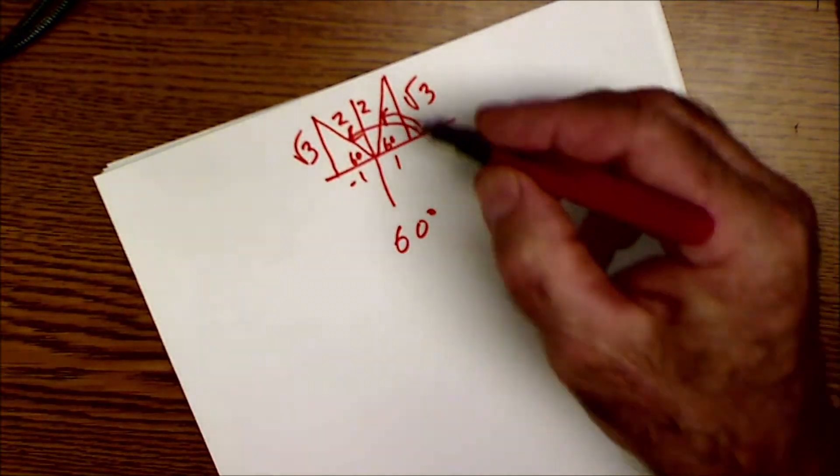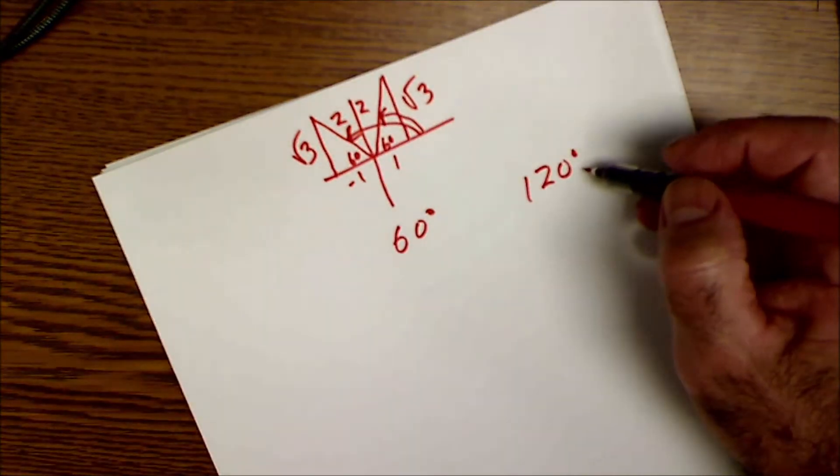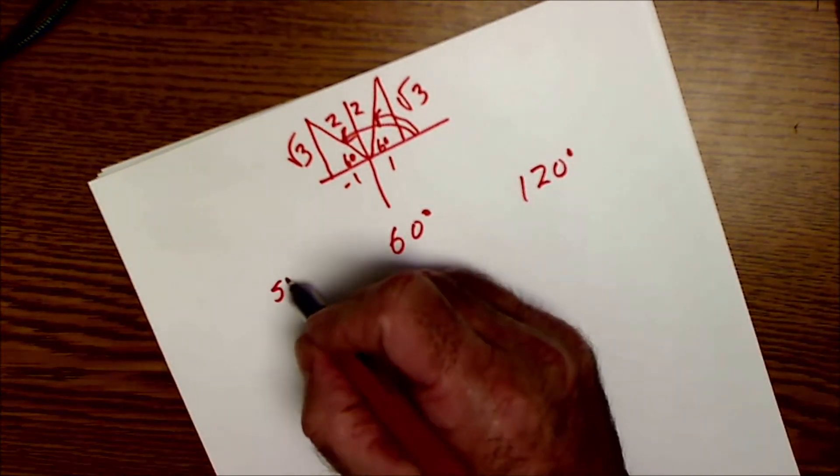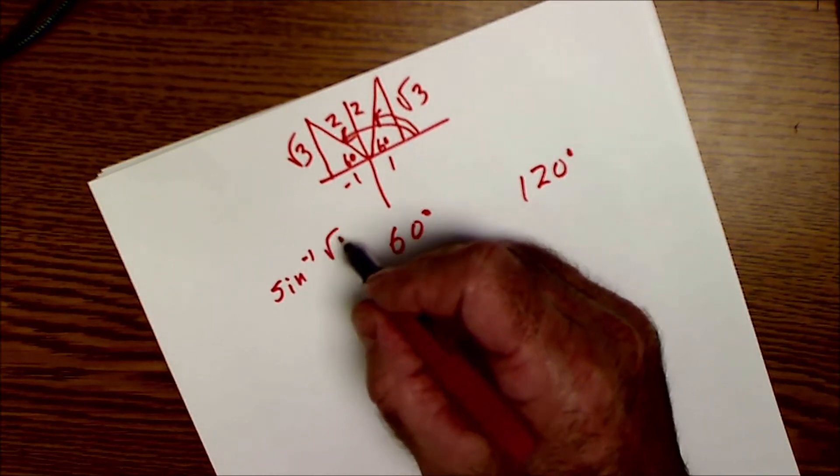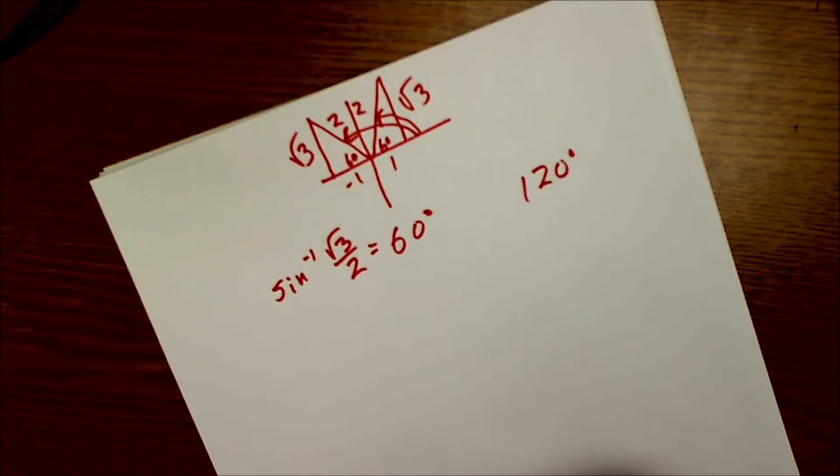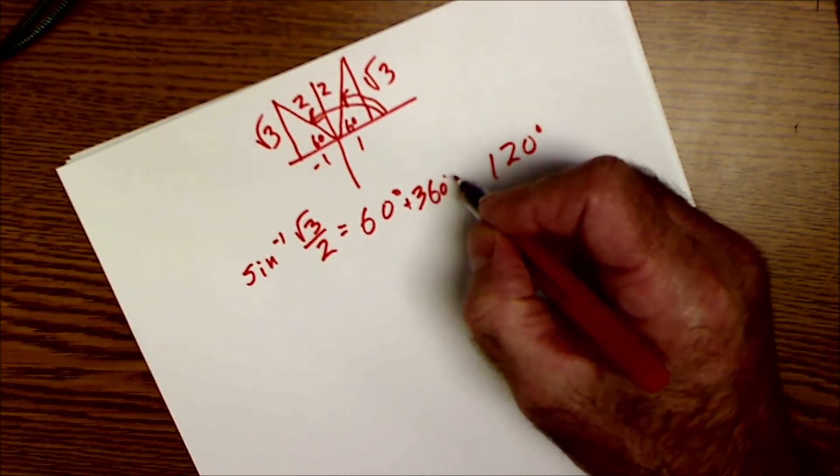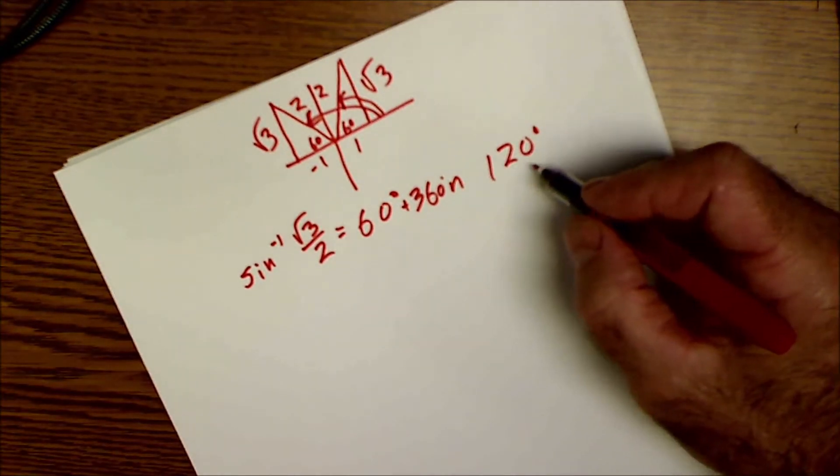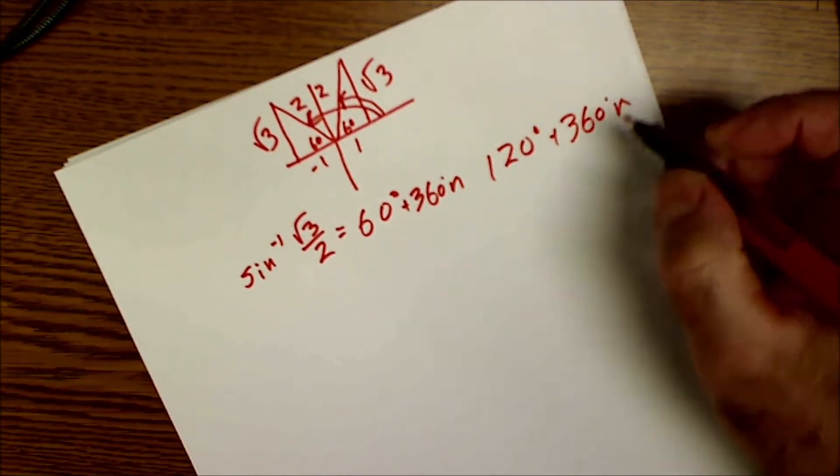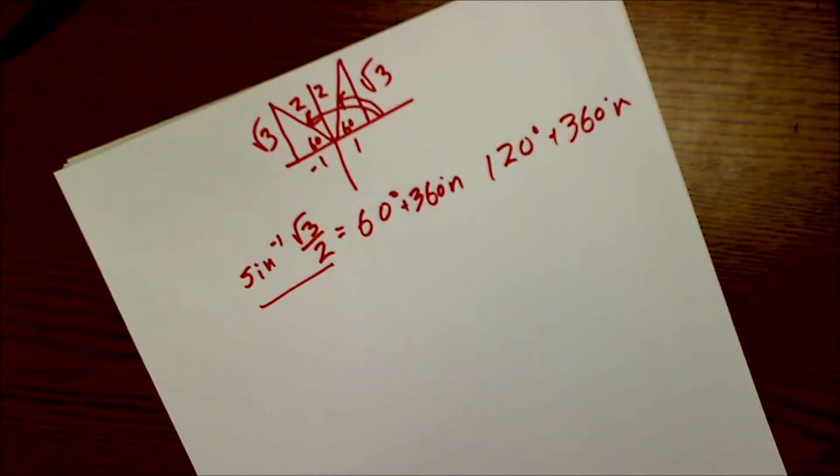But also 360 degrees plus 60 is an answer, and 120 plus 360 is an answer. So the arc sine of root 3 over 2 is this whole series of solutions.